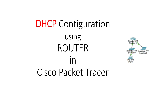We are going to create two networks, connect them with a router, and then the router will dynamically assign IPs to them. If DHCP is not working, then by default in Windows systems, IPs are assigned by APIPA, which is called Automatic Private IP Assignment.